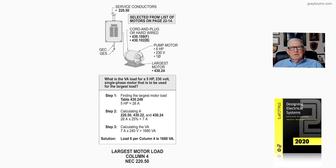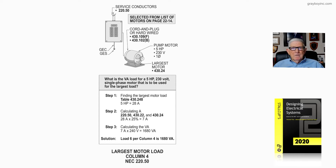We can select from the list of motors on page 22-14 of Stalkup's Electrical Design Book, or Designing Electrical Systems, Volume 2. Notice card and plug connected or hardwired — 43109F gives you your rating and disconnect location, and 43102B gives the exact location. The pump motor is a 5 horsepower, 230V, single phase.